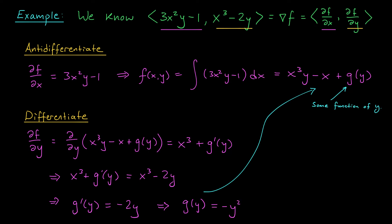Computing ∂f/∂y of (x³y − x + g(y)): the derivative is x³, the minus x goes away, and I have g′(y) at the end. That's supposed to equal x³ − 2y. So x³ + g′(y) = x³ − 2y. The x³ terms cancel out, and we find g′(y) = −2y. Undoing that last derivative, g(y) = −y². We could add a constant, but when we use the fundamental theorem of line integrals, that plus c is going to get canceled out. So I'll take the constant to be zero. My potential function is f(x,y) = x³y − x − y².